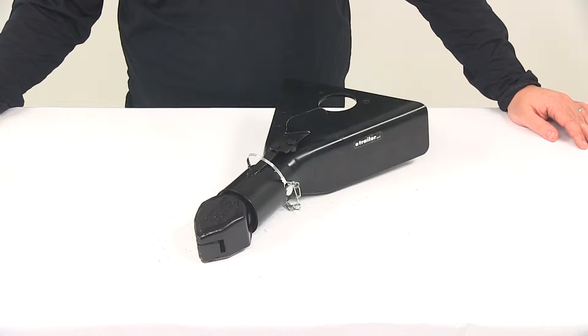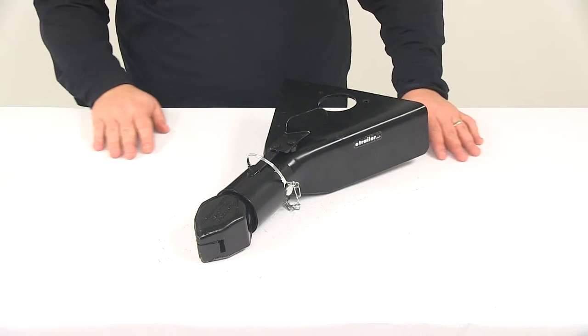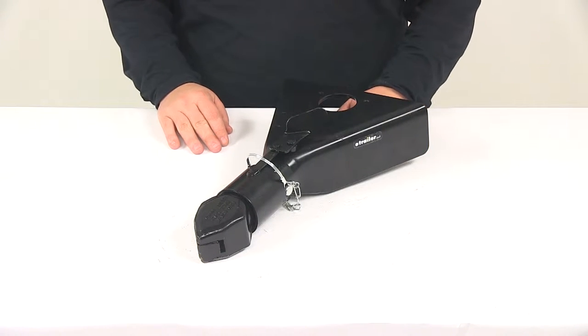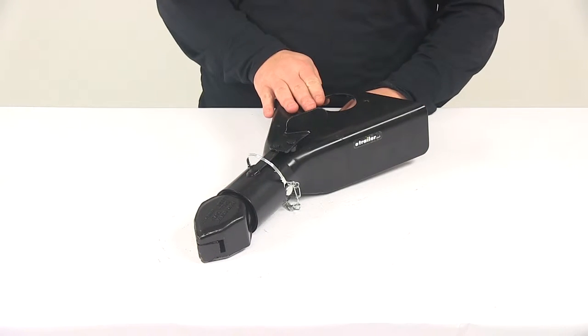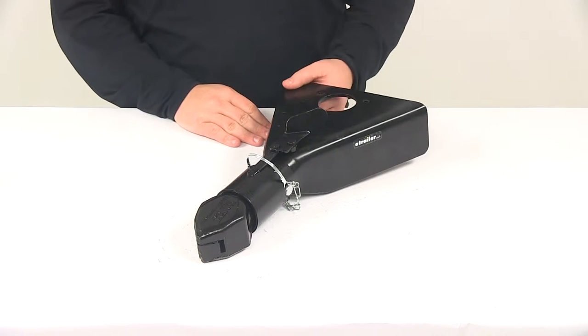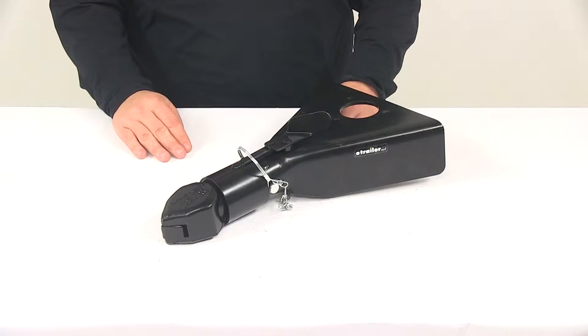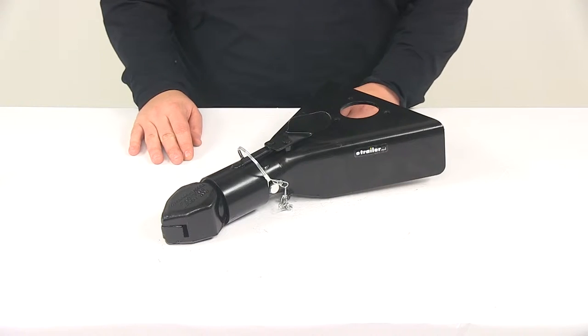Today we're going to be taking a look at an A-frame trailer coupler for a 2-inch hitch ball. This coupler is going to let you hook up your trailer to your tow vehicle. It is a weld-on installation. It's going to feature a gross weight capacity of 7,000 pounds with a maximum tongue weight capacity of 1,050 pounds.